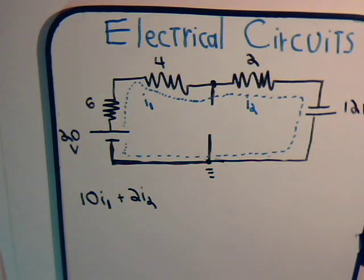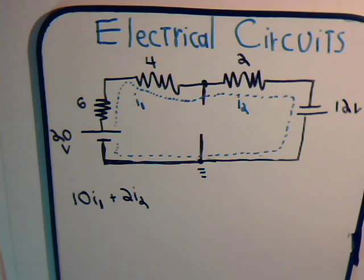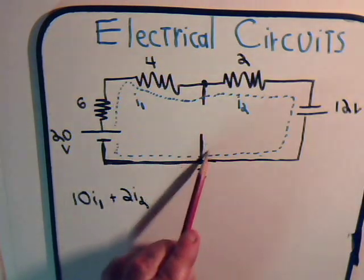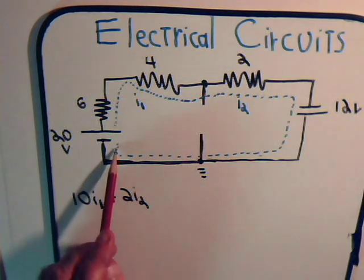In the super mesh current we have two voltage sources. Here for current I1, it is going through the battery.